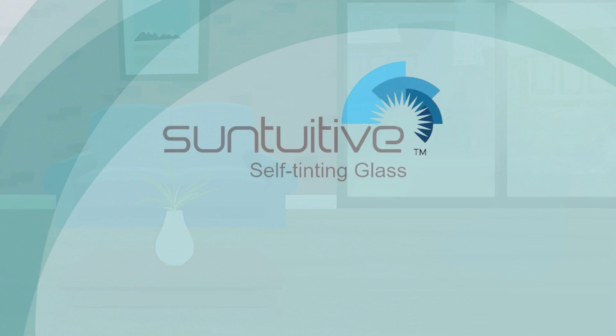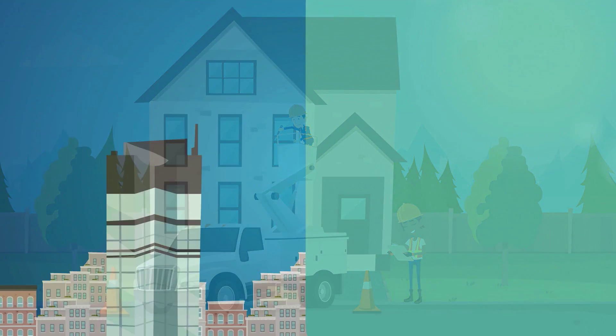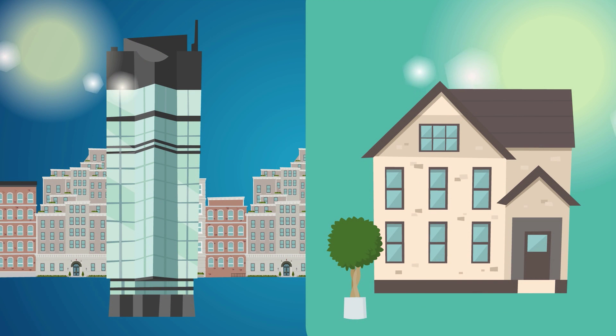The windows also help to block outside noises and prevent harmful UV light from damaging your fixtures and furnishings. Suntuitive glass works all by itself with no wires or control systems, which makes them easy to install in new construction or when renovating, for commercial projects or at your house.